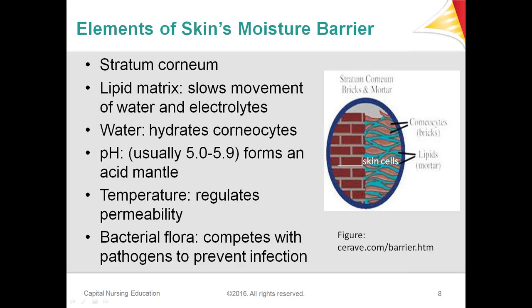If the skin barrier is disrupted, water loss occurs and bacterial invasion can occur as well. The stratum corneum's lipid matrix functions almost as mortar between the bricks that are the corneocytes, providing that protective skin layer on the outside. It also serves as protection against bacteria, and the bacteria on the surface provide additional pathogenic prevention of infections. There's a lot that happens in that tenth of a millimeter layer.